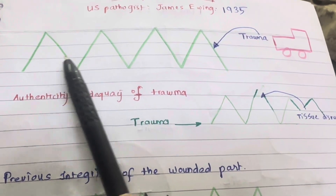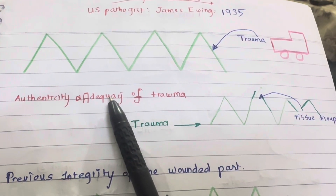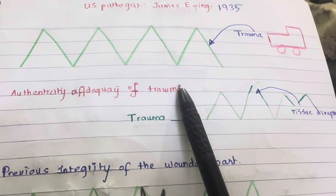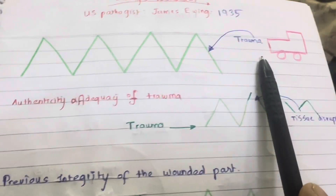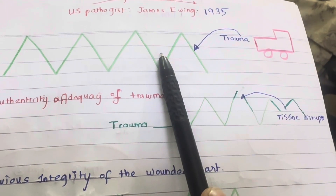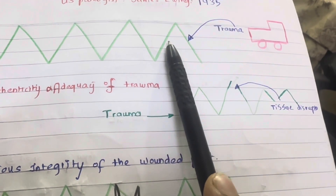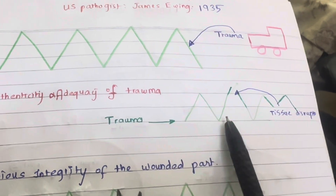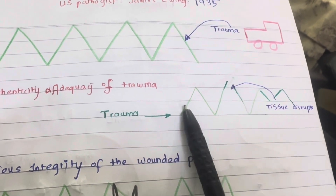The first point is authenticity and adequacy of trauma must be shown. There should be a trauma, and that trauma must be sufficient to cause tissue disruption.